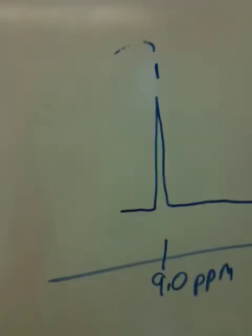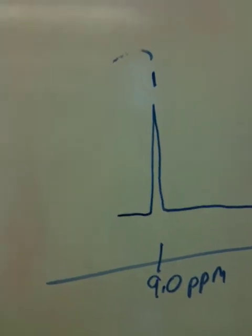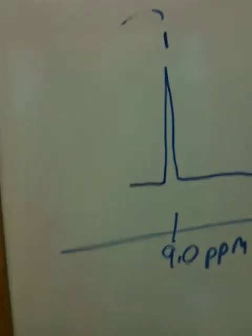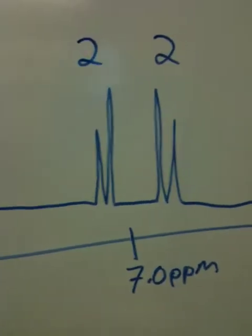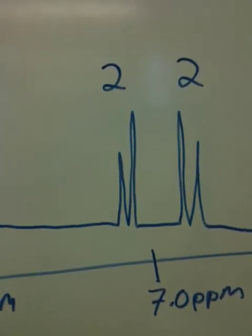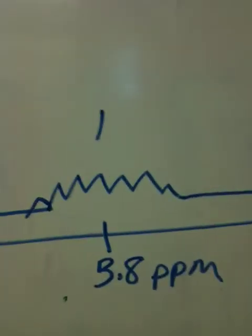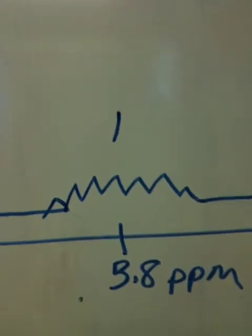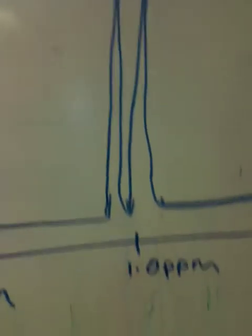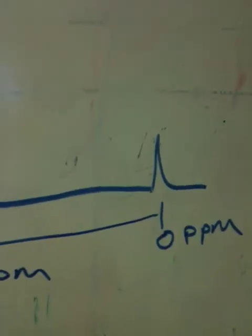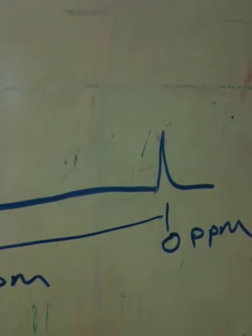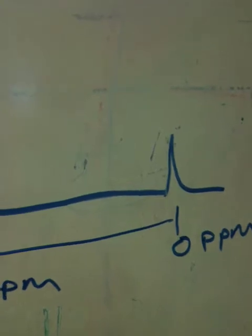I drew this rather crude looking NMR on my board. The NMR has a peak at 9 ppm, two sets of peaks at around 7 ppm, a multiplet at around 3.8 ppm, and a very nasty looking doublet at around 1 ppm. The peak at 0 is of course the reference compound called tetramethylsilane (TMS).